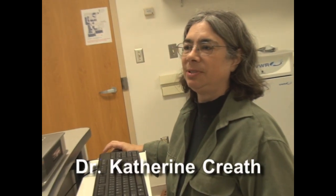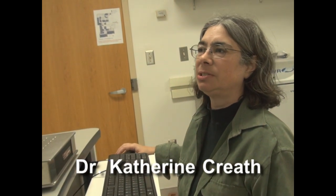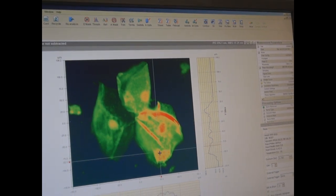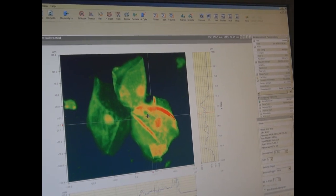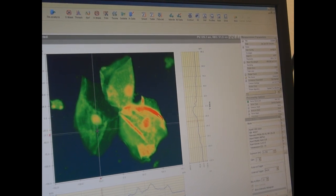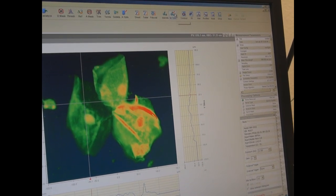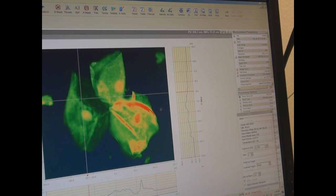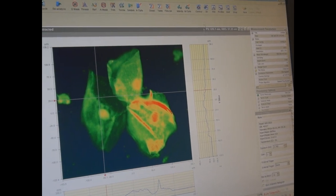Here's a measurement of a group of cheek cells. Here's the contour plot and we can look at the optical thickness at various points within the cell, and we can see different kinds of organelles and nuclei inside the cell. We have a resolution here of about one and a half microns.